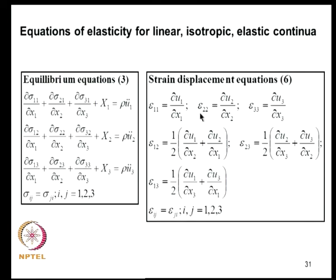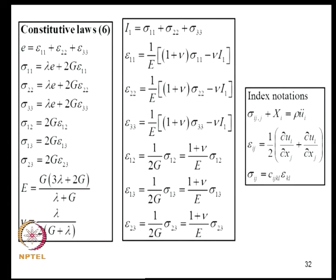There are 6 strain-displacement relations using the linear model. The material is assumed to be Hookean and isotropic, so there are 6 constitutive laws relating stress and strain, involving two elastic constants—Young's modulus E and Poisson's ratio nu (or alternatively Lame's constant and shear modulus). We can express stress in terms of strains or strain in terms of stresses. For completeness, these can also be written using index notation.